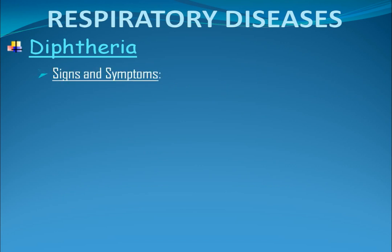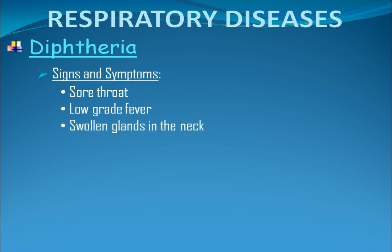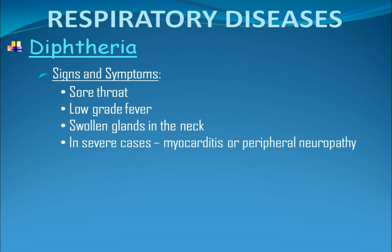Signs and symptoms: The illness has an acute onset and the main manifestations are sore throat, low-grade fever, and swollen glands in the neck. In severe cases, the toxin may cause myocarditis or peripheral neuropathy. It can also cause difficulty of breathing and swallowing due to the buildup of dead tissue in the throat and tonsils.